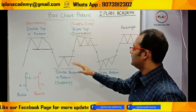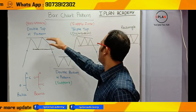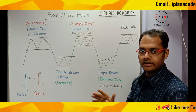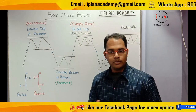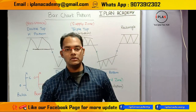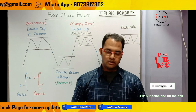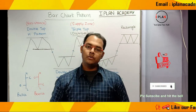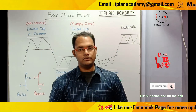Double bottom W pattern and triple bottom are also created in the support area or demand zone. Double top and triple top are created on the resistance area, supply zone, or distribution phase. If you like this video, please like, comment, and share this knowledge. Thank you for watching.